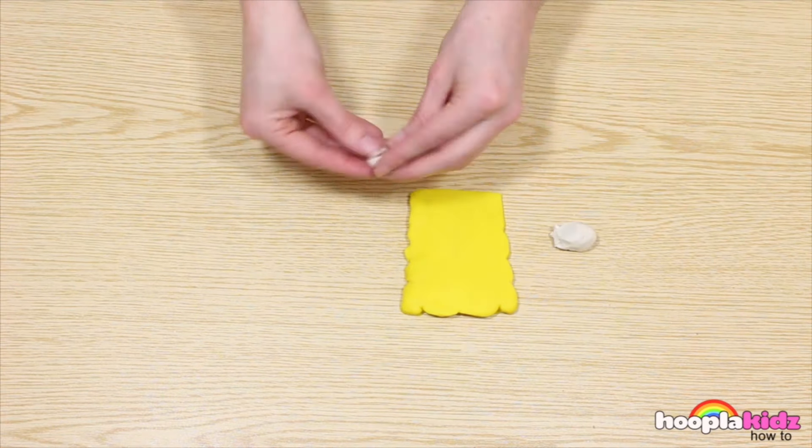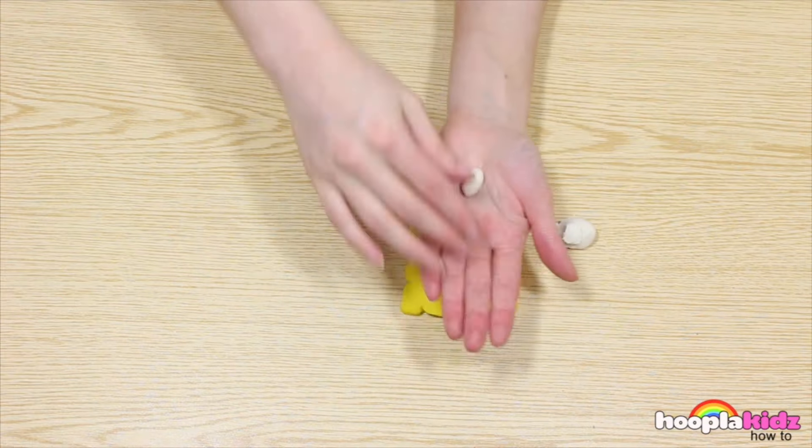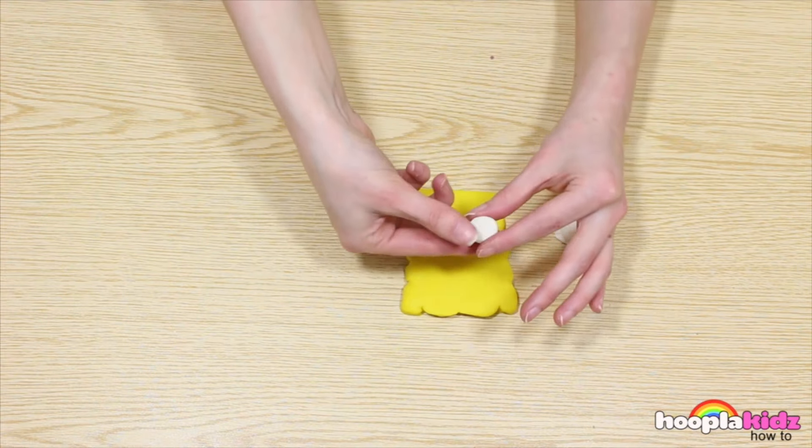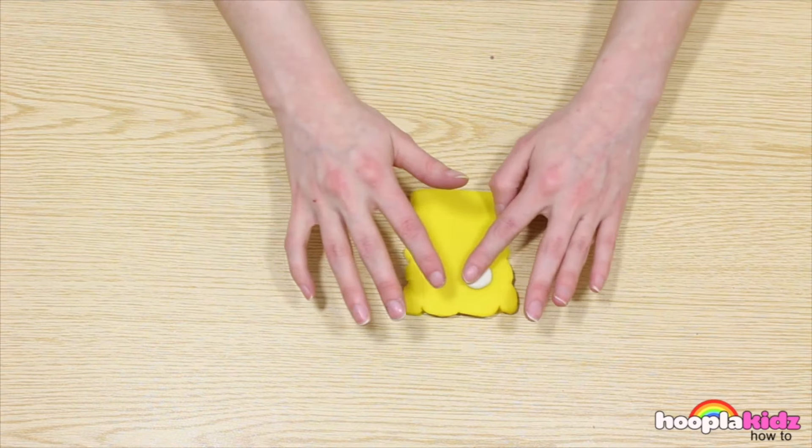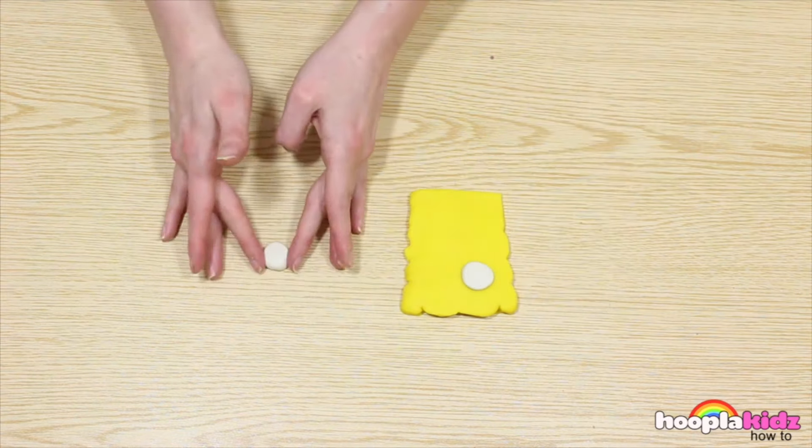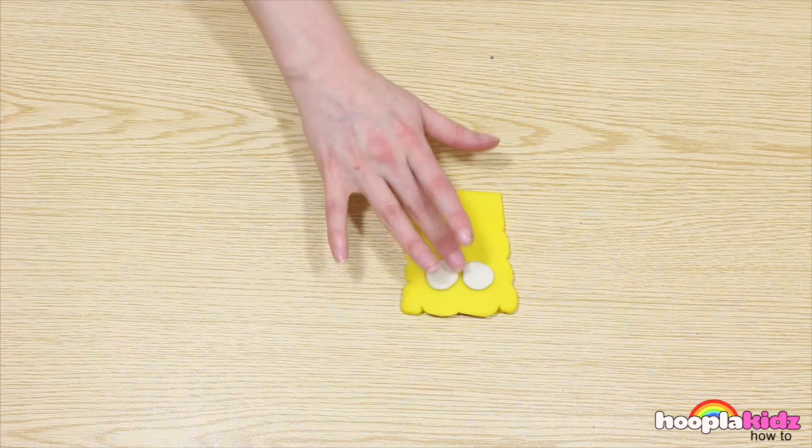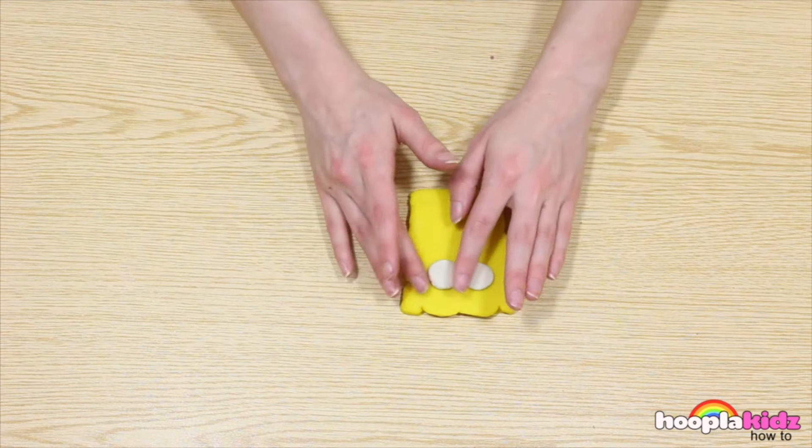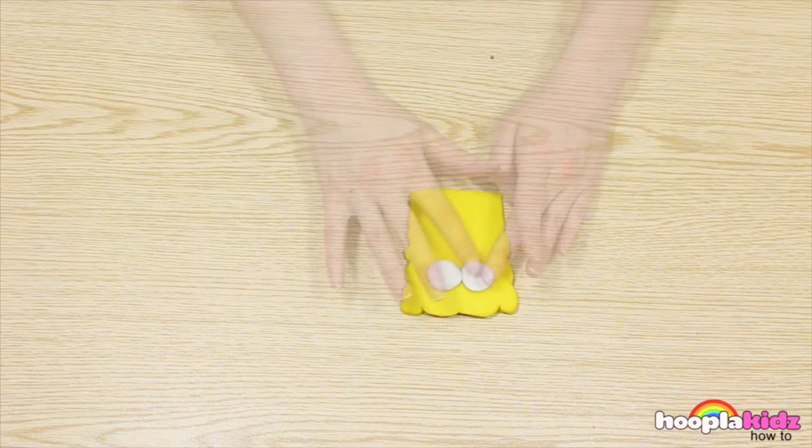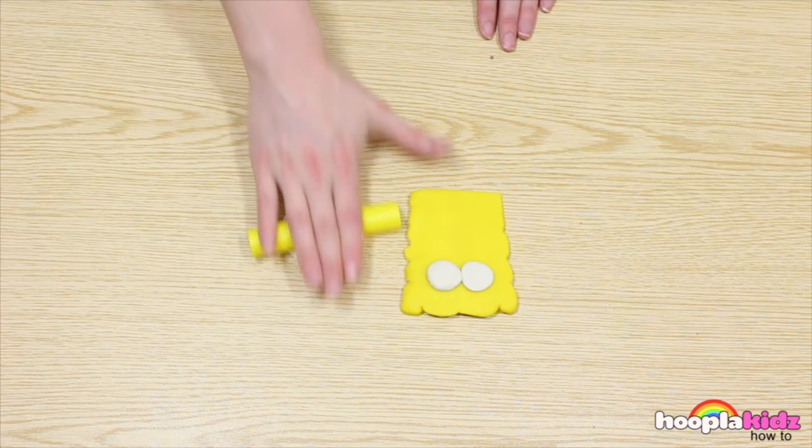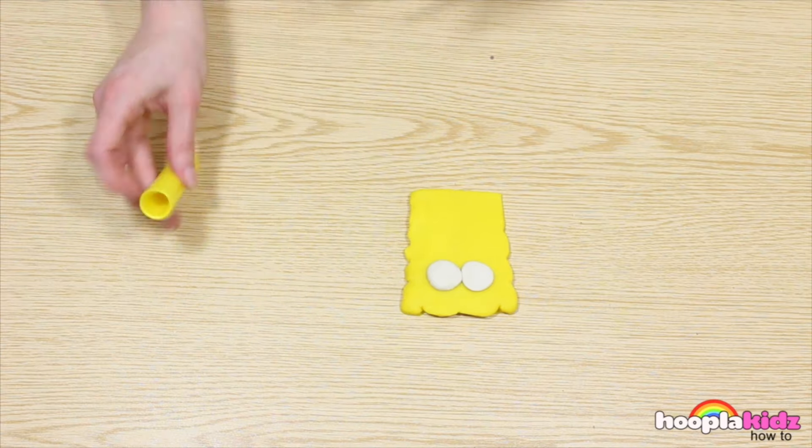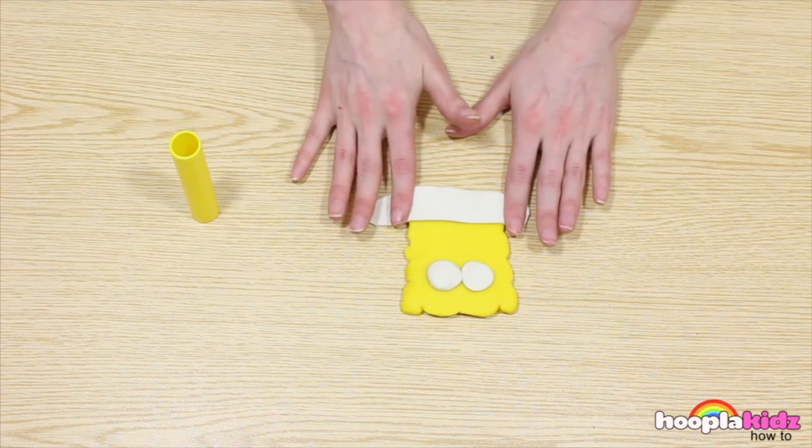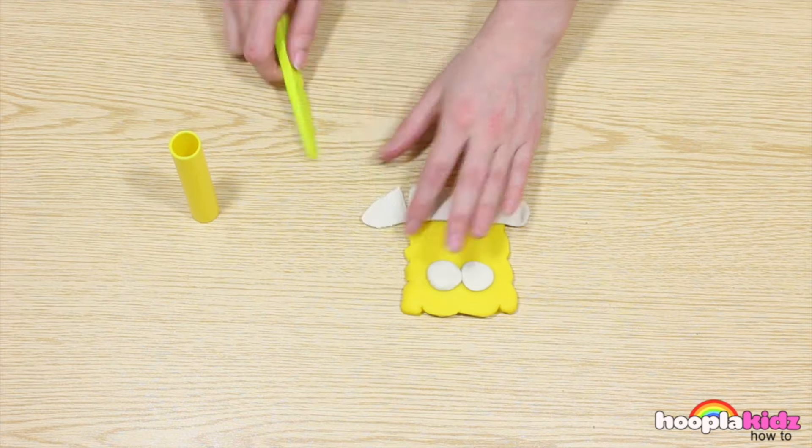Now we're going to take some white Play-Doh, roll it into a ball and flatten it out. You've now got a perfect circle for one of SpongeBob's eyes. Don't forget to make his other eye. Now we're going to make a long thin shape out of the white. We want to add this to the bottom and cut off any excess. This is SpongeBob's shirt.